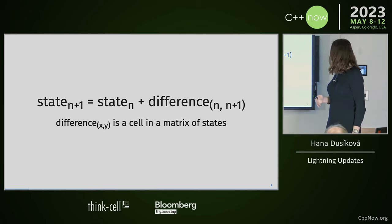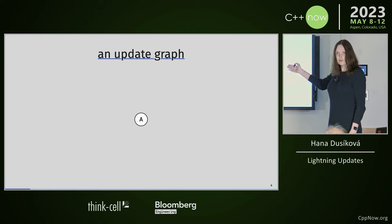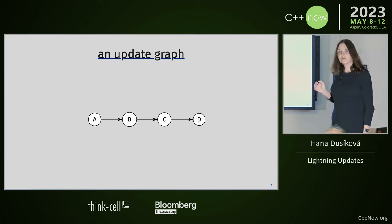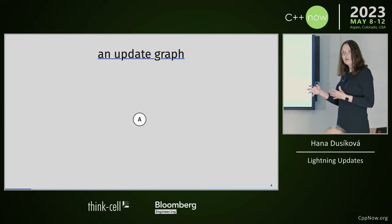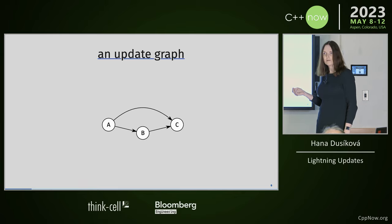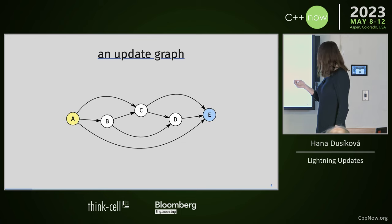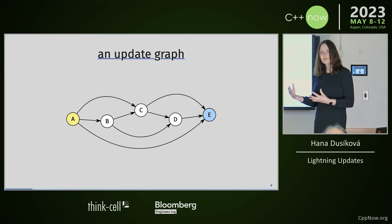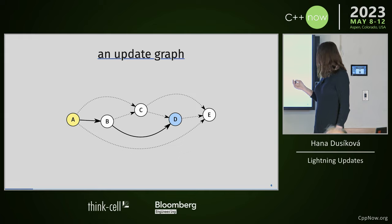State is just state; the difference between previous state and current state is just a cell in a matrix or a graph — an upgrade graph. An upgrade graph has version A going to version B going to version C, etc. But in reality it's not that simple: you don't have every user on the latest version. Sometimes users are on different versions, so the graph should represent that, because you don't want your user to download millions of files.